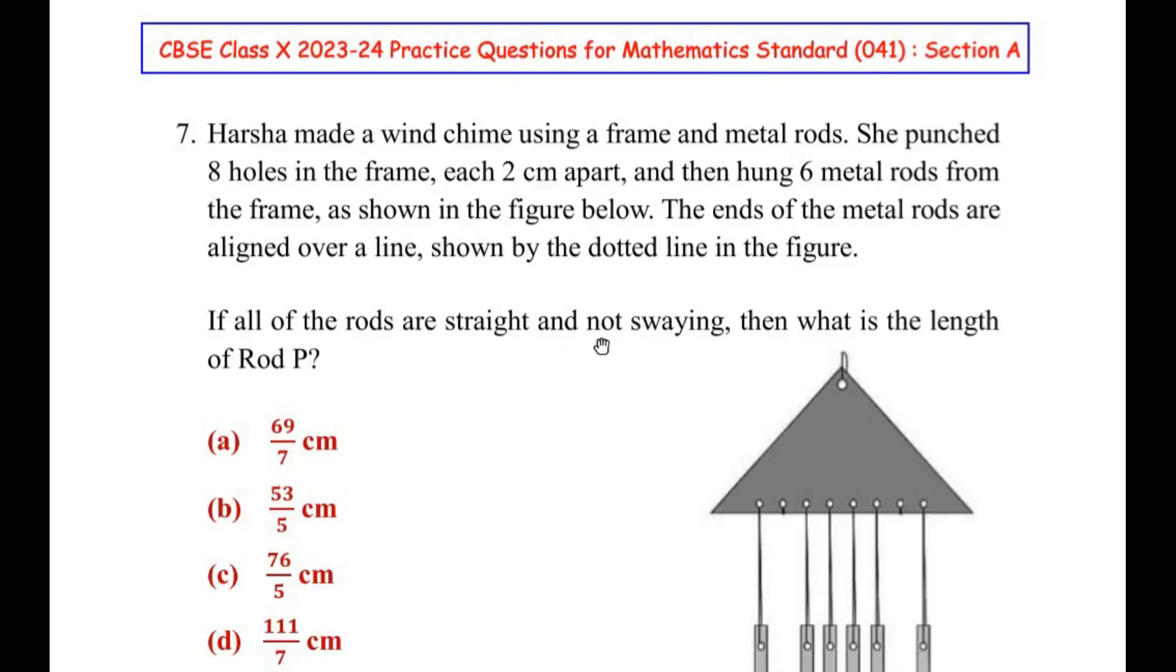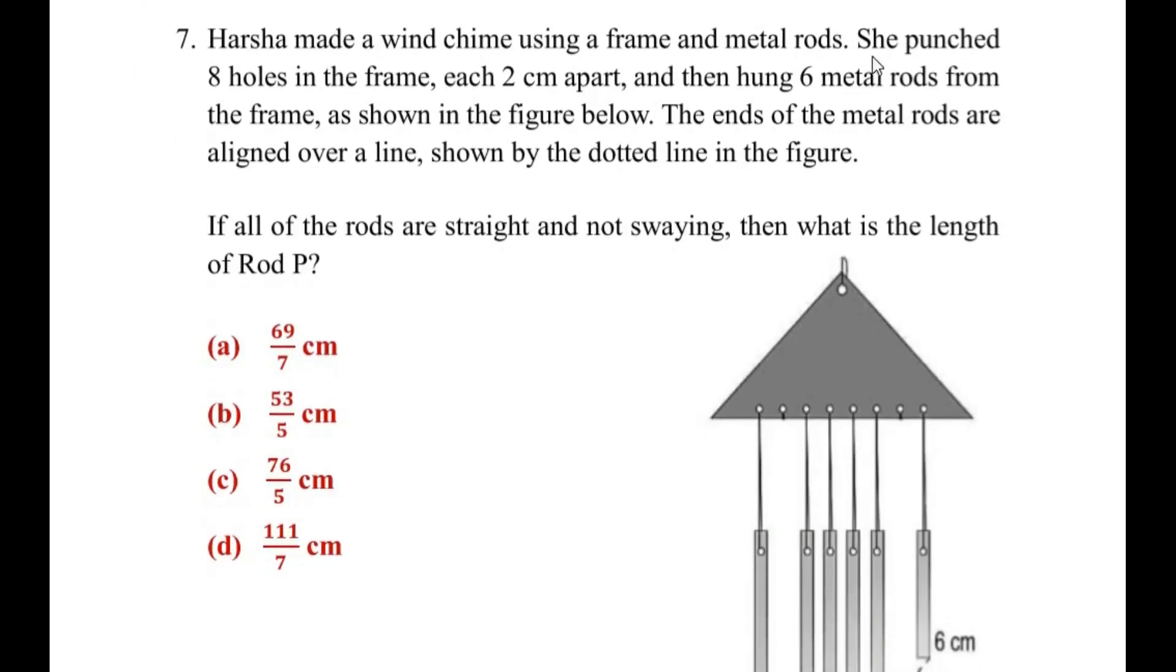Now this question is from the Arithmetic Progression Chapter. Here, Harsha made a wind chime using a frame and metal rods. She punched 8 holes in the frame each 2 cm apart and then hung 6 metal rods from the frame as shown in the figure below.